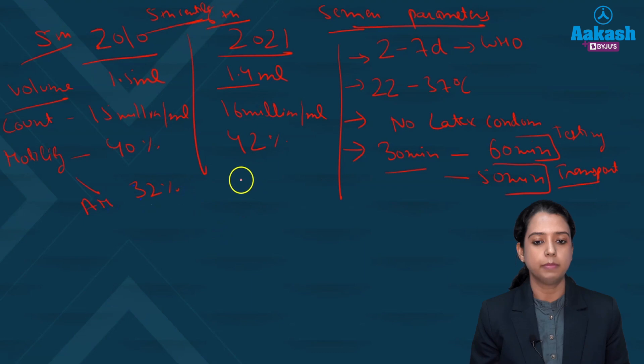Actively motile previously were 32 percent, the reference range. Now it has been reduced to 30 percent. So there has been a change of 2 percent. Motility from 40 to 42. Actively motile 32 to 30.